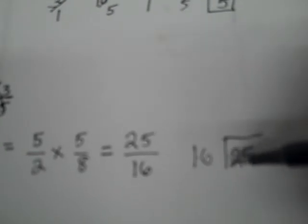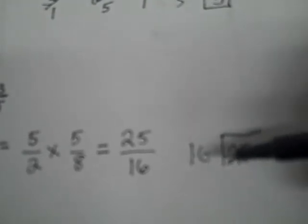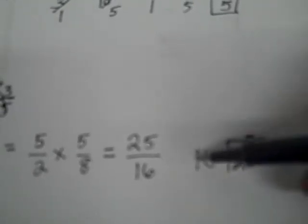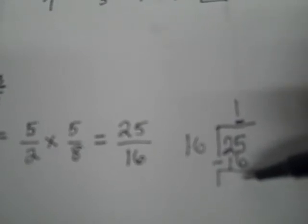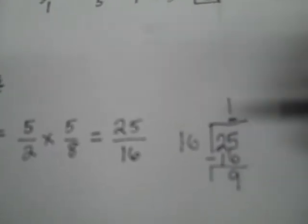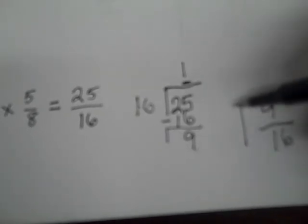16, we need to figure out how many times 16 can go into 25 without going over. 2 is not greater than 16, but 25 is. So 16 can go into 25 one time. 1 times 16 is 16. 25 subtract 16 is 9. No more numbers to pull down. My whole number is 1, my denominator is 16, and my numerator is 9. And that is the final answer.